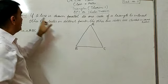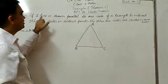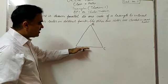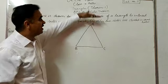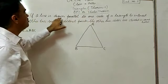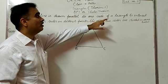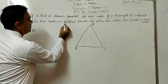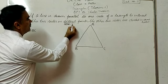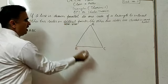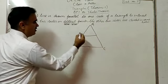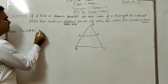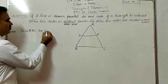If a line is drawn parallel to one side, and it intersects the other two sides in distinct — meaning separate — points, then those sides are divided. For example, if I draw a line parallel to BC, I draw this line DE. In triangle ABC, DE is parallel to BC.